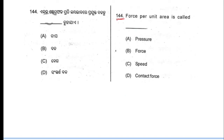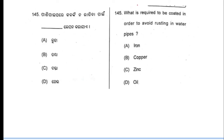Next question, question 144: option number A is the correct answer. Moving to next question. Question 145: what is required to be coated in order to avoid rusting in water pipes? Question 145, option number C is the correct answer.